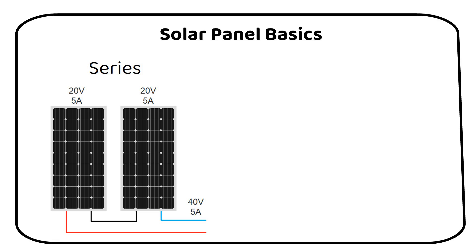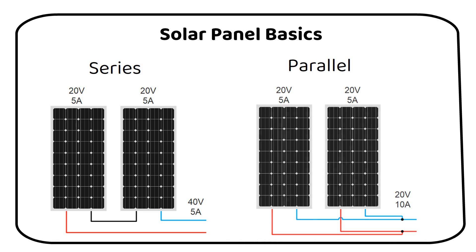Then use parallel connections if you have more panels. With parallel connections, it's the current from each panel that adds up, while the voltage stays the same as one panel. Opt for parallel wiring if your setup faces shading, or if you're using a PWM charge controller, which requires the panel voltage to match the battery voltage.